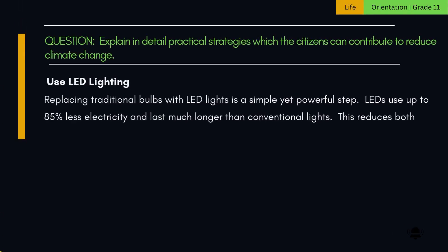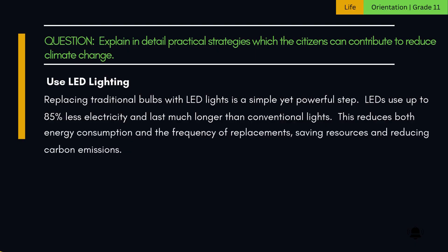12. Use LED lighting. Replacing traditional bulbs with LED lights is a simple yet powerful step. LEDs use up to 85% less electricity and last much longer than conventional lights. This reduces both energy consumption and the frequency of replacements, saving resources and reducing carbon emissions.